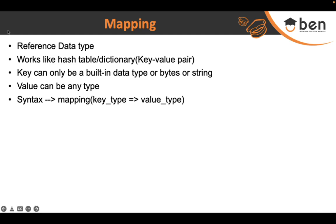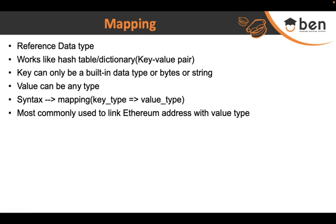The syntax for a mapping data type is simple. You use the mapping keyword, then in round brackets you write the key type first — whether it's uint, string, boolean, or bytes — then you put an arrow (=>) and then you write the value type, which can be a struct name, enum, or simple types like string. The most commonly used use case for mapping is to link Ethereum addresses with certain value types like structs, enums, or strings. We'll now move to Remix IDE to write and deploy our own mapping.